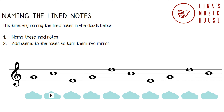The next note is on the first line. The first word in Every Good Boy Deserves Fruit is Every, and the first letter of Every is E, so this is an E note. The next note is on the second line. The second word is Good, and the first letter of Good is G, so this is a G note.